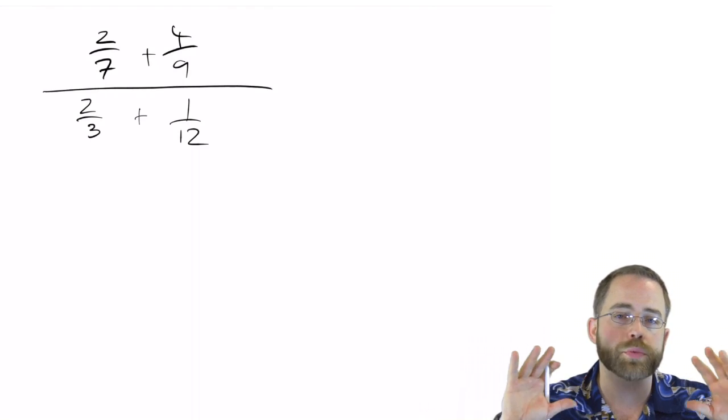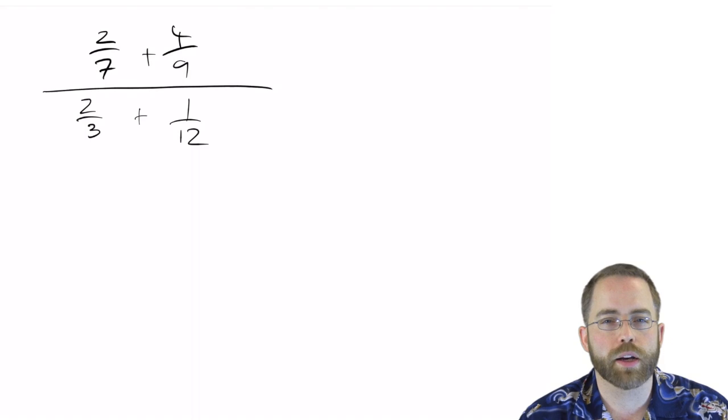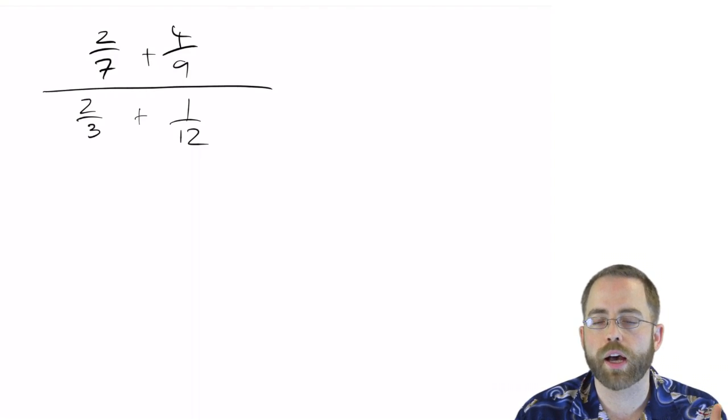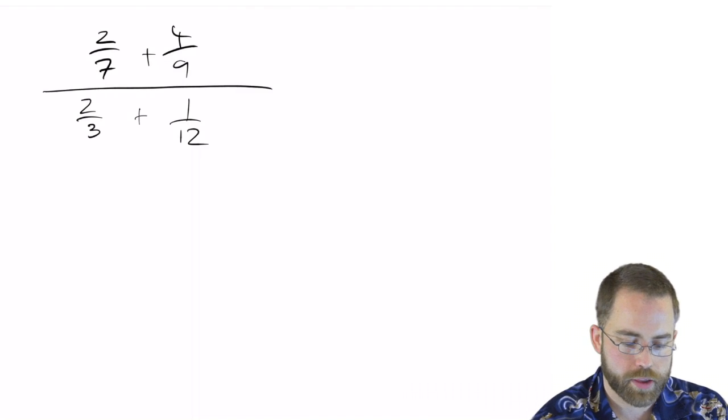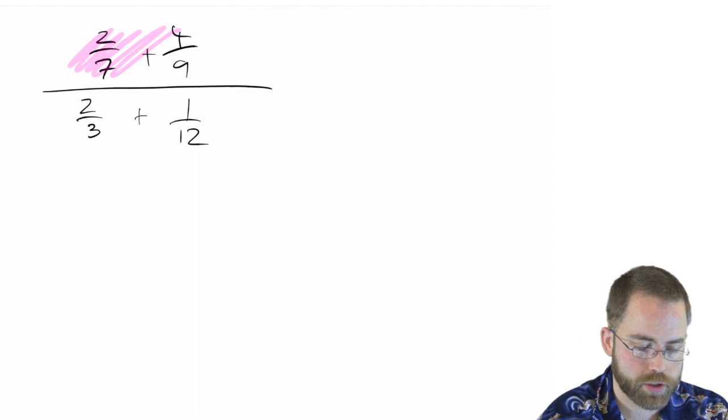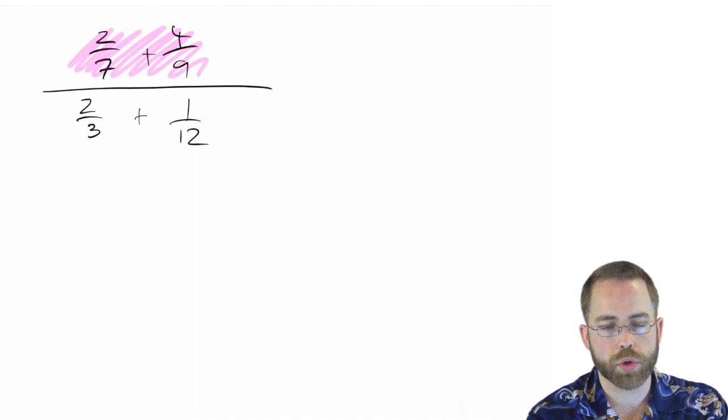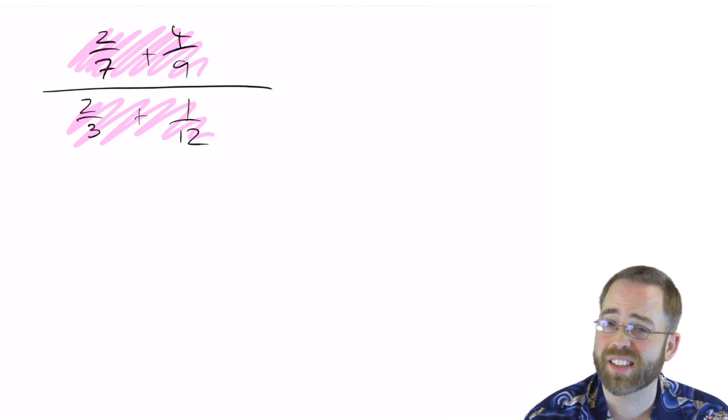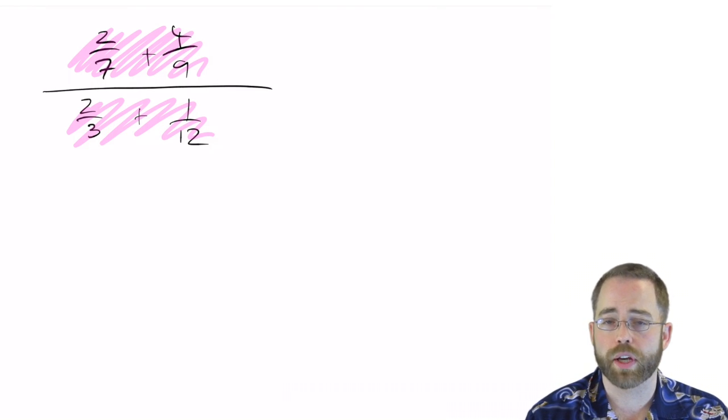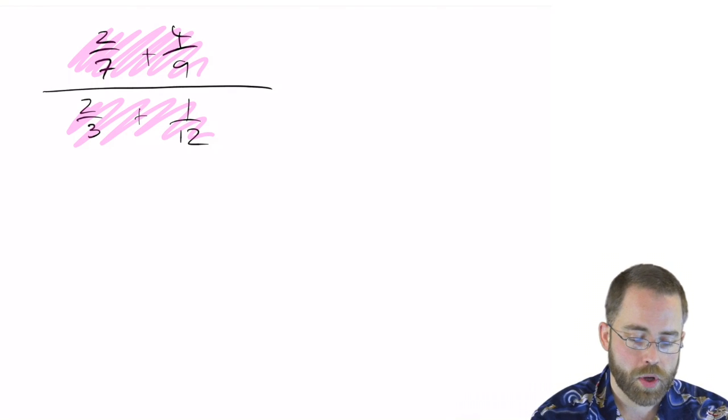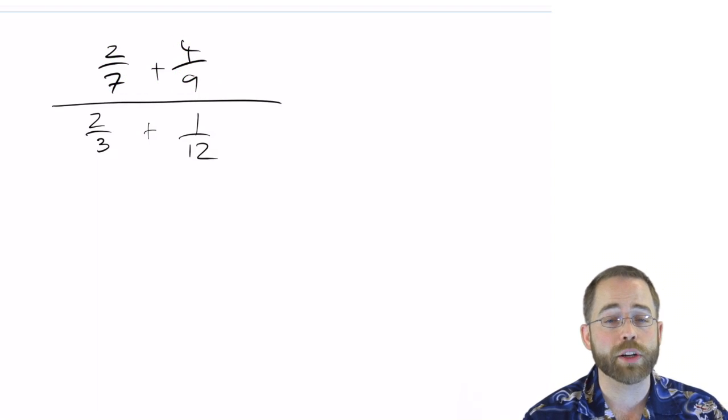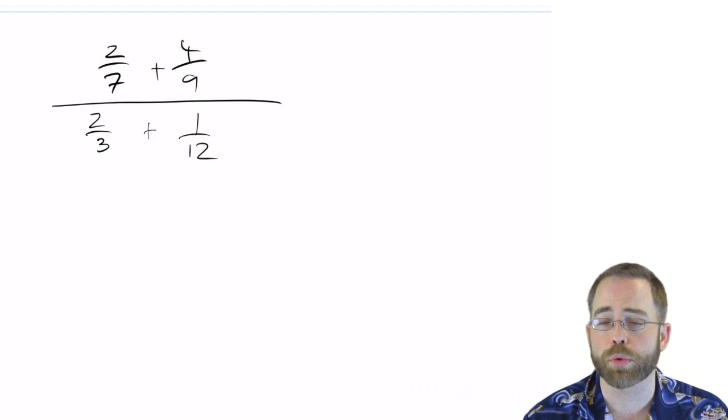But it could be more complicated than that. We could have fractions inside of fractions. We could have three parts instead of two. Things can get a lot worse. So I think most people have a sort of gut instinct to say, well, let's get a common denominator on the top and just deal with that, and then come down and sort those guys out, and then maybe or maybe not they get stuck about what to do once they've come down to a fraction over a fraction.